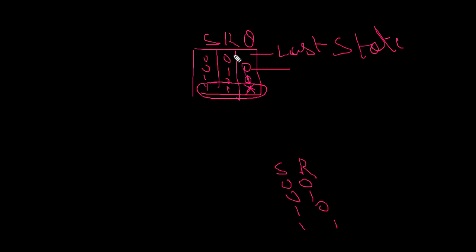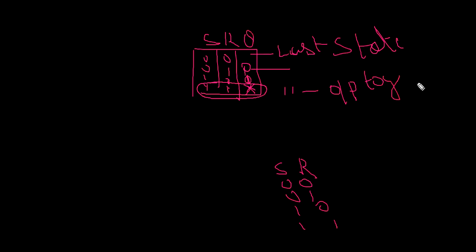But in JK, with the same truth table, when both inputs are 1 and 1, the output will toggle. This overcomes the disadvantage of SR — the illegal condition — and is taken care of by JK, where the output toggles. This is the key difference between SR and JK flip-flops.